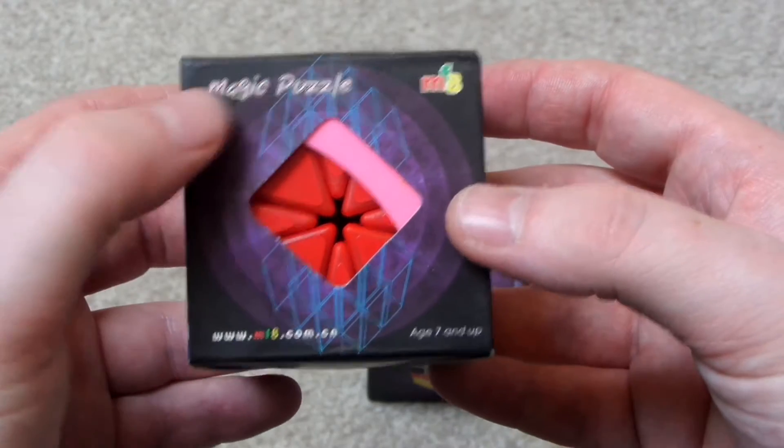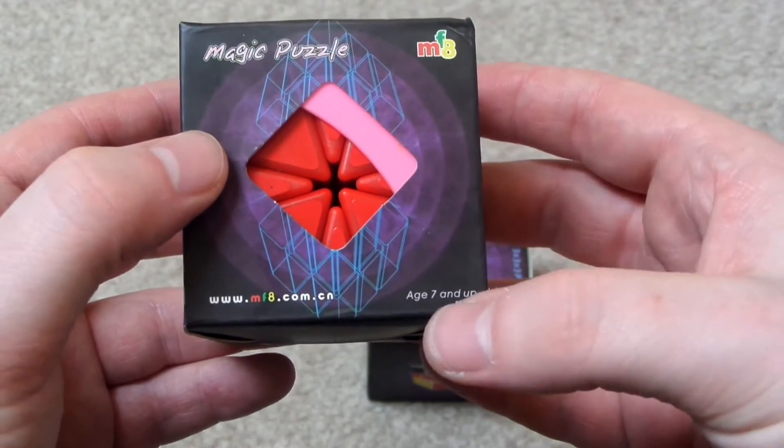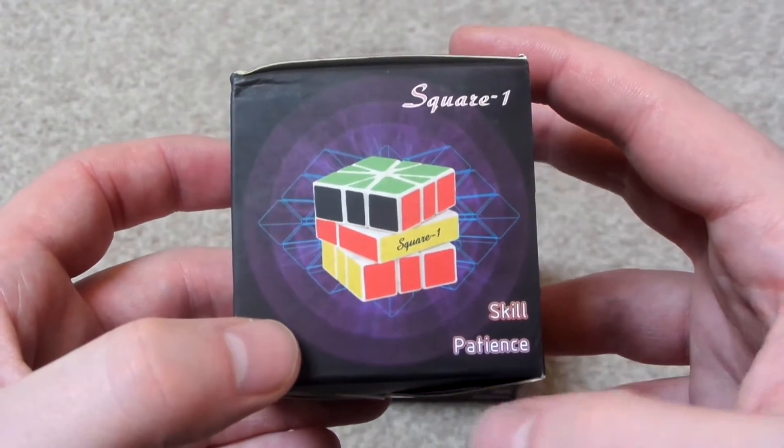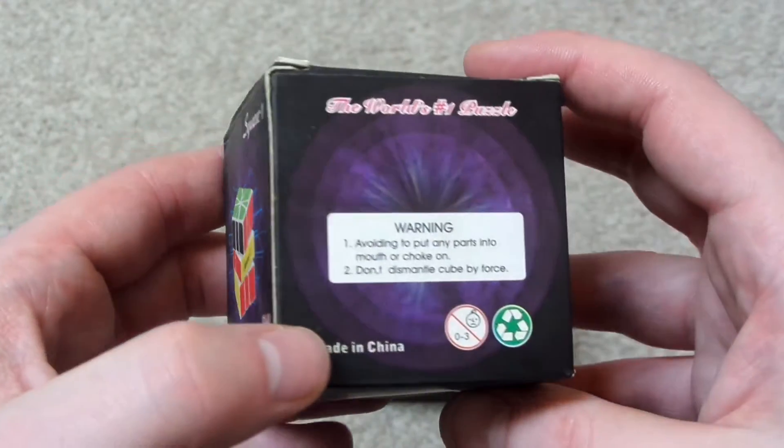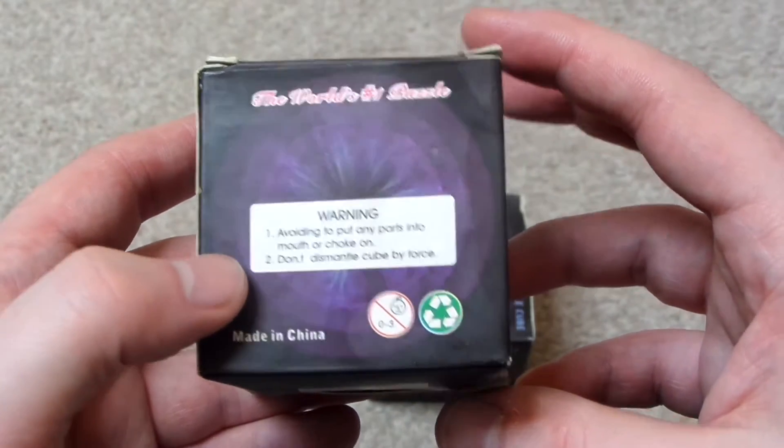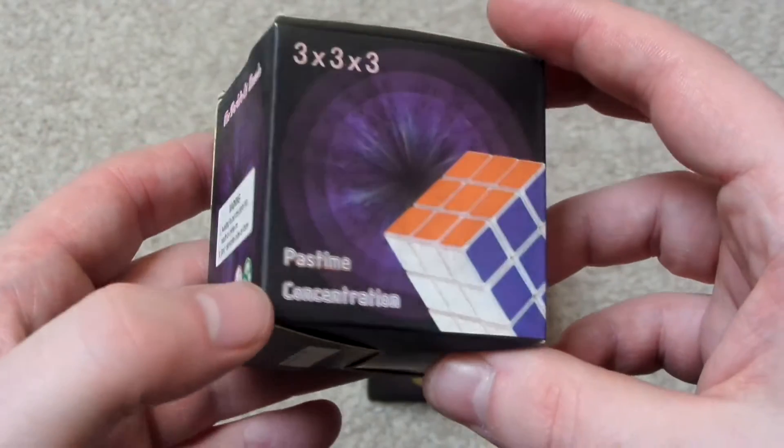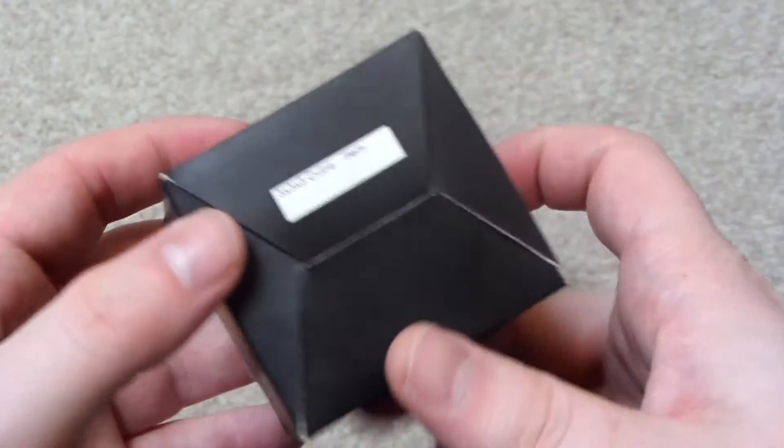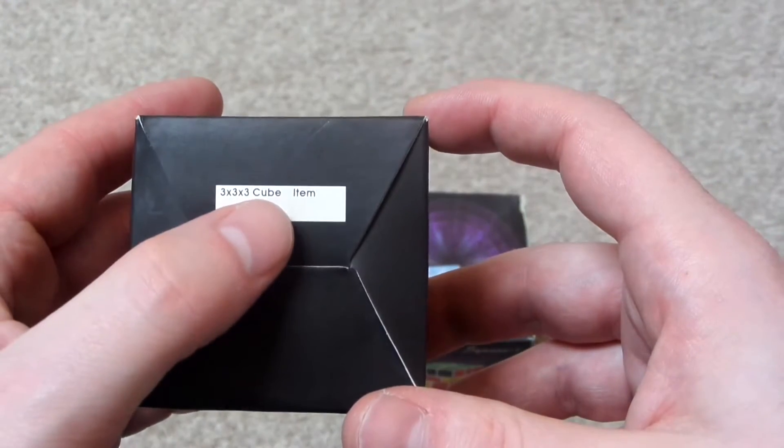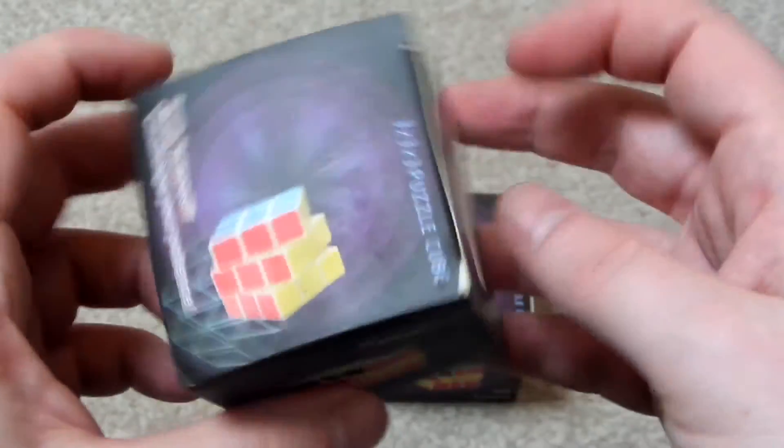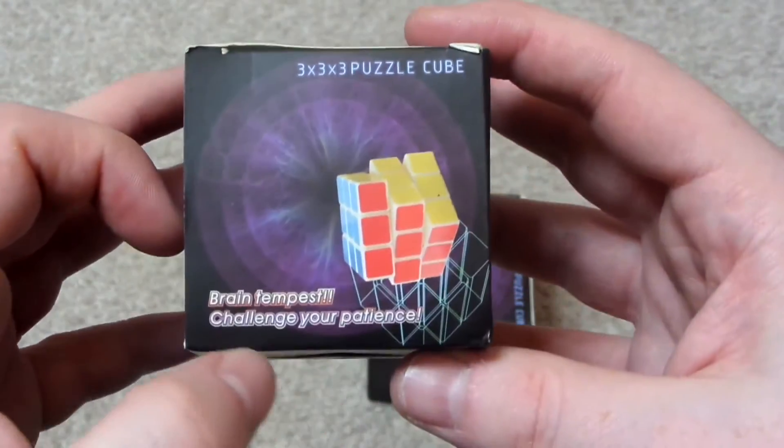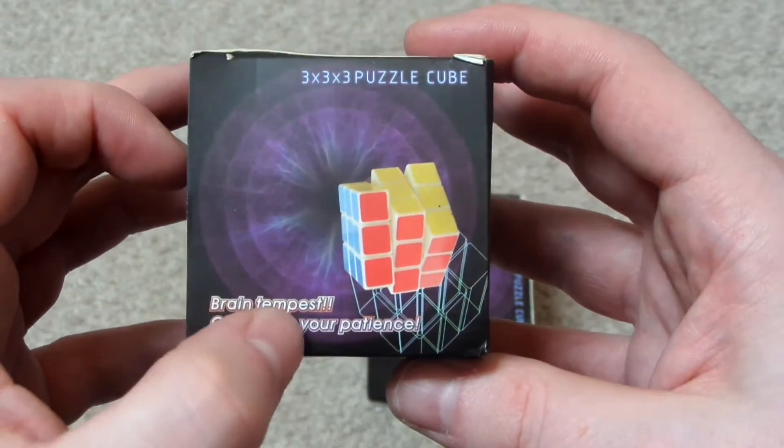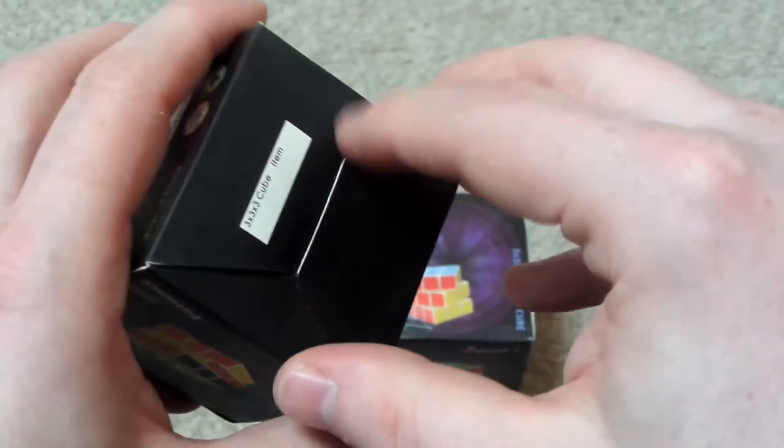So there you can see it says Magic Puzzle, MF8, age 7 and up. Skull Patience, picture of a Square-1 there. The world's number one puzzle. Passed time, concentration, 3x3 cube item. Brain Tempest, challenge your patience. I'm not sure what Brain Tempest means. But let's open this up.